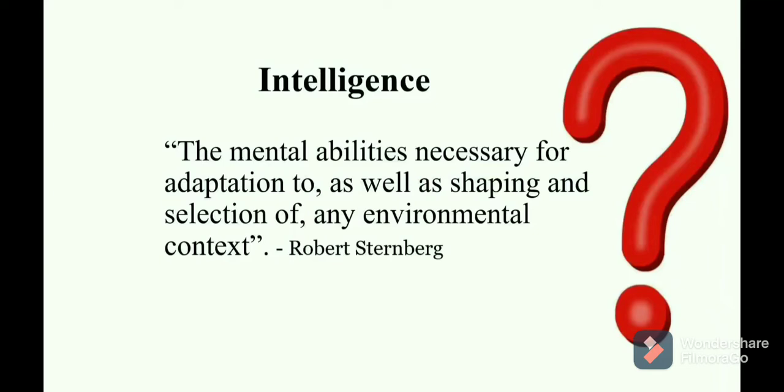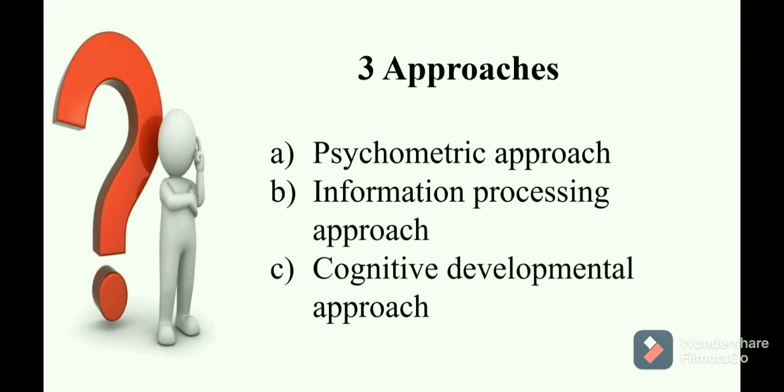Various theories have been advocated to explain the nature of intelligence. Considerable attention and effort has been devoted to find out whether intelligence is a single ability or consists of multiple abilities, and whether there is only one type of intelligence or several types. These issues led to the development of different theories of intelligence. There are mainly three approaches: psychometric approach, information processing approach, and cognitive developmental approach.